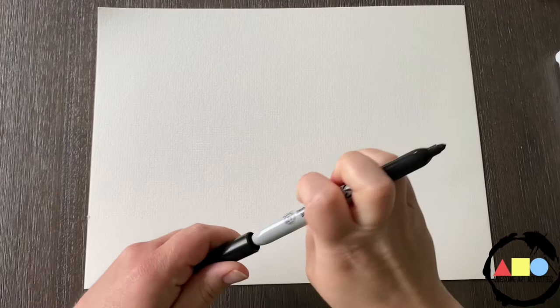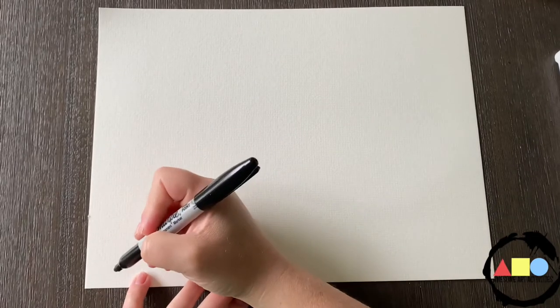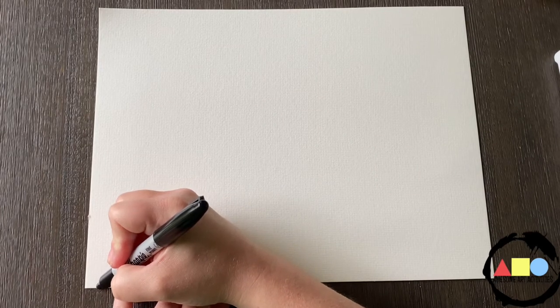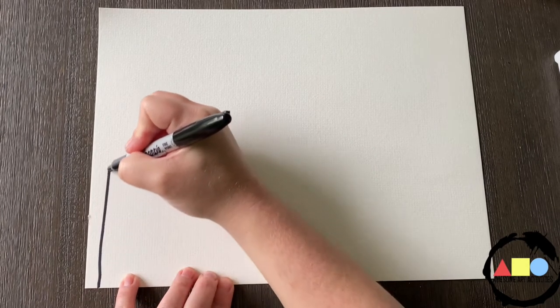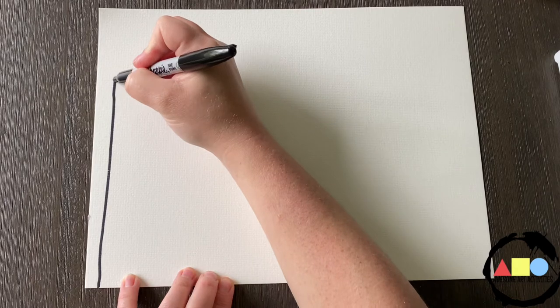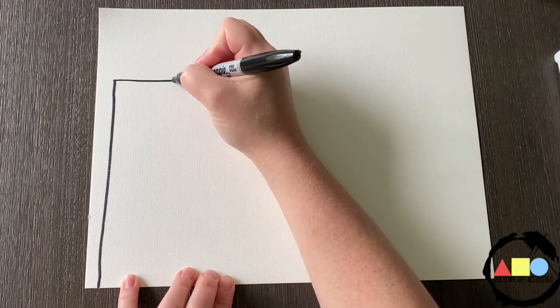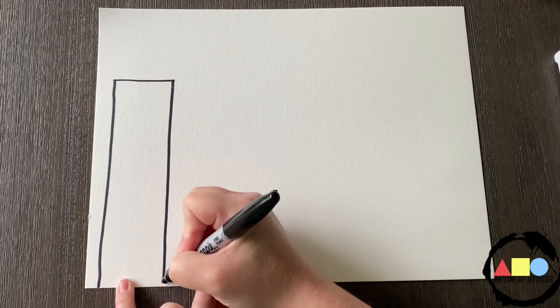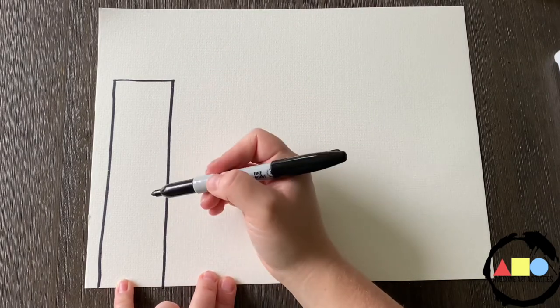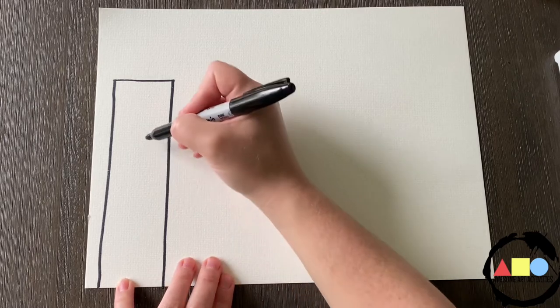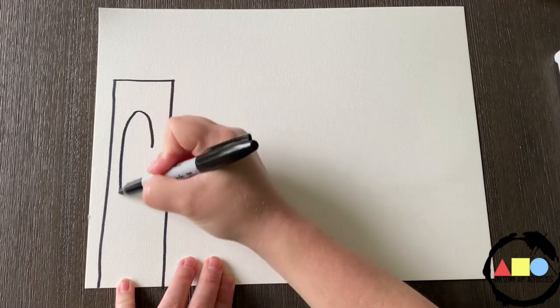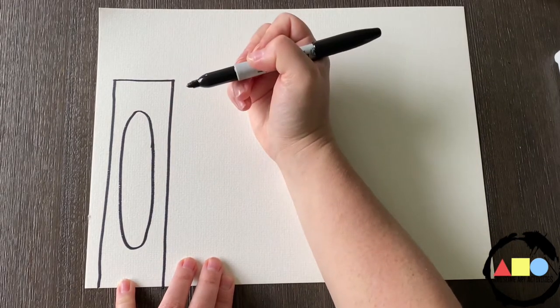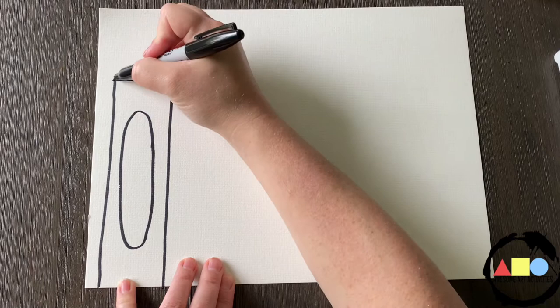We're starting with our beginner level castle. We are going to be using a permanent marker, so make sure you have that handy. Now we're going to start with a rectangle shape. We're going to start with a straight line. We go horizontal, and then we go back down to the bottom of our paper. Inside our rectangle, we're going to draw an oval.